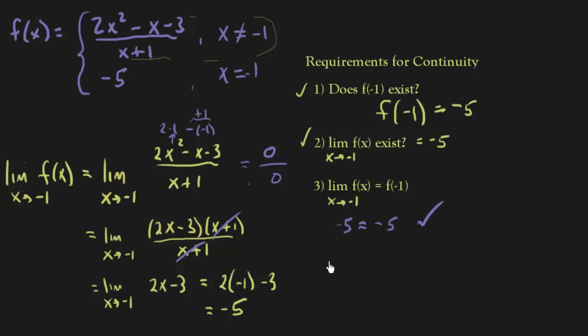So what this means is that I'm continuous at x equals negative 1, and since I showed in the first example that this piece is continuous everywhere except for negative 1, and now I just showed that with the addition of this negative 5 I am now continuous at negative 1, we can then have a final answer of it's continuous over the whole real number line.